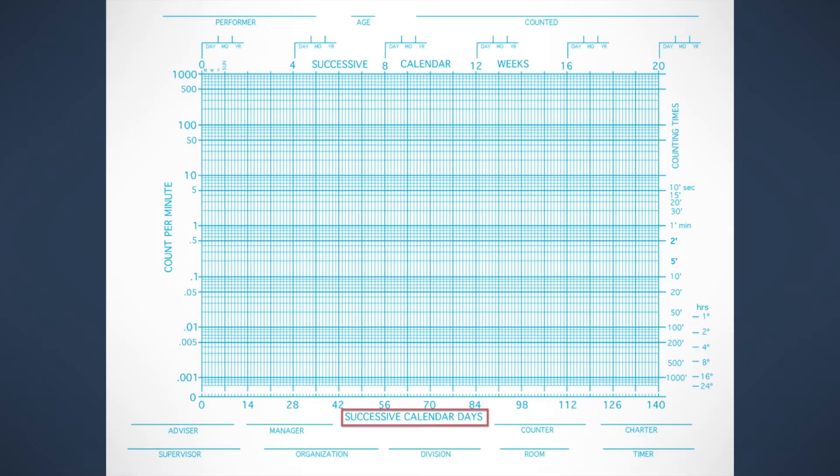If you look at the horizontal axis, it's labeled successive calendar days on the bottom. Those numbers indicate the number of successive calendar days, and a standard view of the chart has 140 days in it.